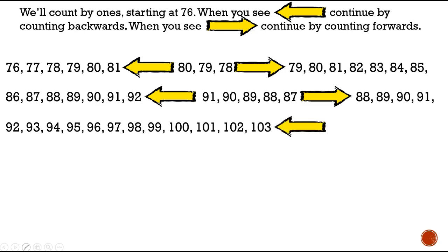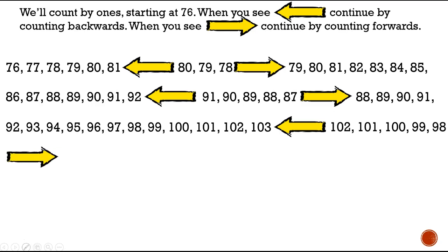Now we're counting backwards again from one hundred and three: one hundred and two. We're going to count forwards again from ninety-eight: ninety-nine.